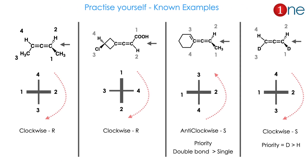I have given some examples to practice yourself. For the second compound, which is a kind of spiro system, you have to look at the terminal carbons for chirality — the same front-side and back-side method applies. The third example has a benzene ring where double bonds get higher priority than single bonds — the same CIP rule applies. The fourth example contains deuterium, which has a higher atomic number than hydrogen and so gets higher priority. Practice as much as possible to get the concept better.